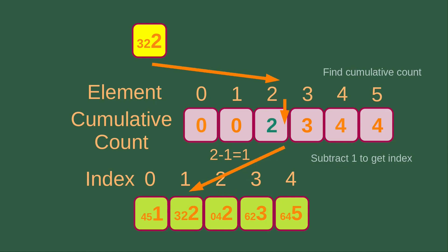Finally, we have one more element to go, which is 322. Before doing so, I update the cumulative count from 3 to 2. Then going through the same process, element number 2 has a cumulative count of 2. Subtracting 1 from 2 gives 1, so index 1 is the position of 322.